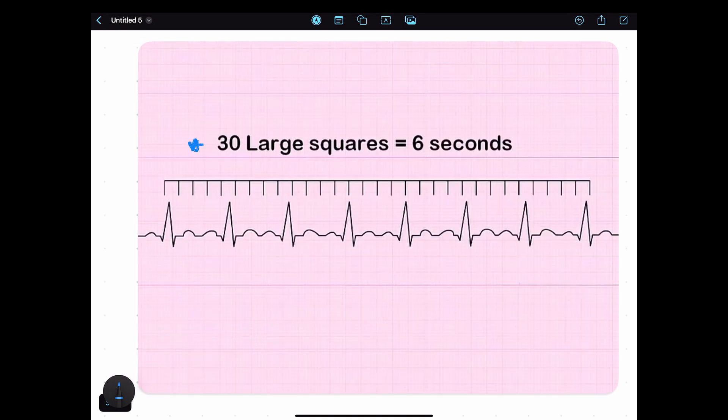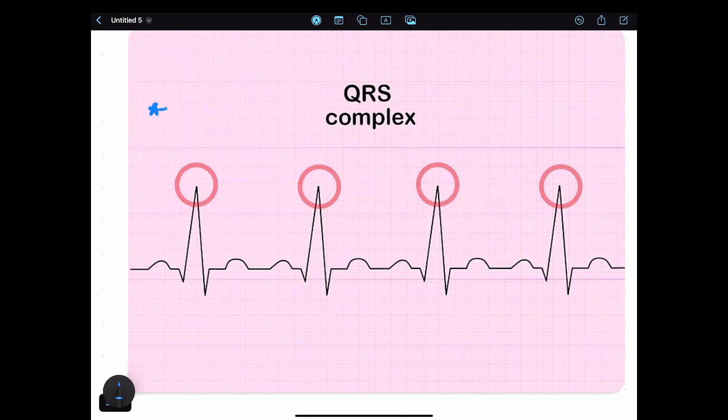The important concept here is that six seconds are equivalent to 30 large boxes. So we are going to calculate R spikes over the period of six seconds, which is equal to 30 large boxes.